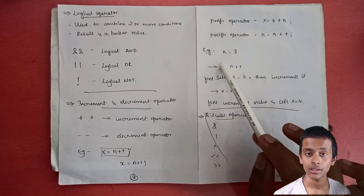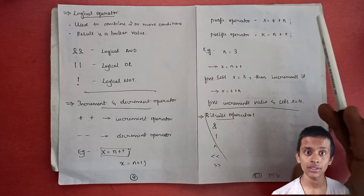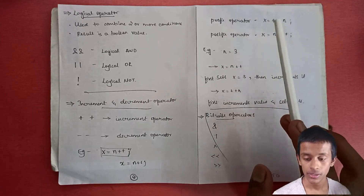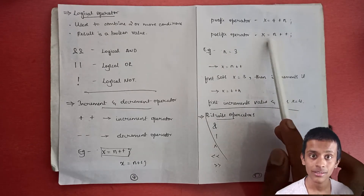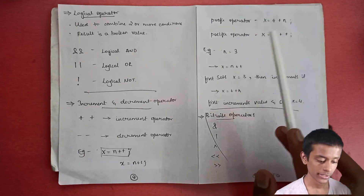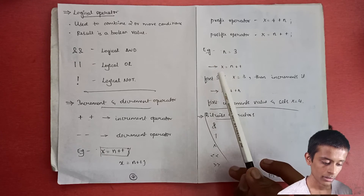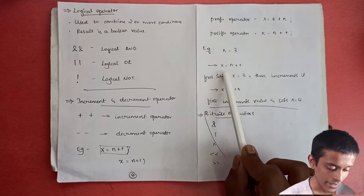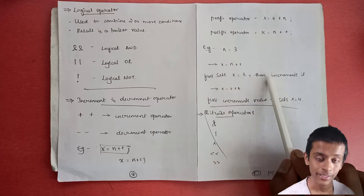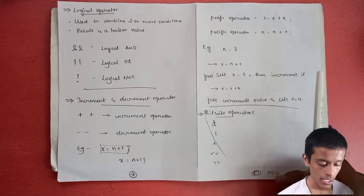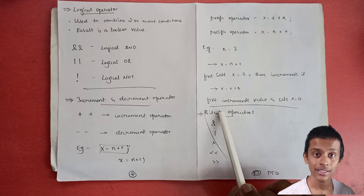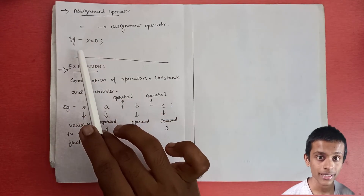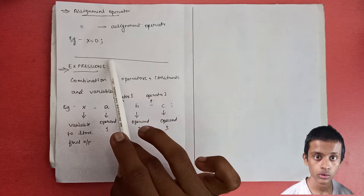In both cases the final increment is the same, but the difference is: the prefix operator increments n before its value is used, while the postfix operator uses n's current value first, then increments it. For example, if n = 3: in postfix 'x = n++', this first sets x = 3, then increments n to 4. In prefix 'x = ++n', it first increments n to 4, then assigns x = 4. The assignment operator '=' assigns a value to a variable — for example, 'x = 0' assigns 0 to x.